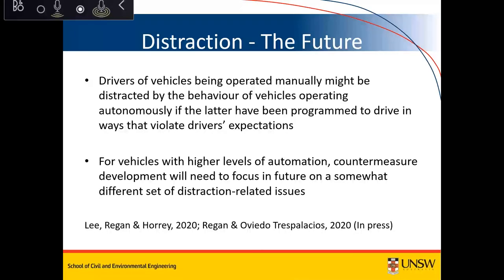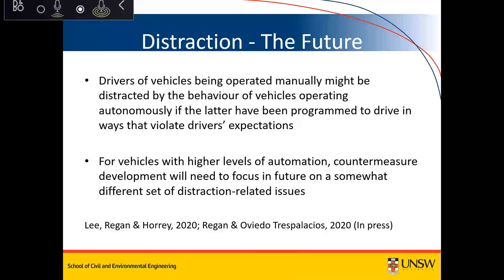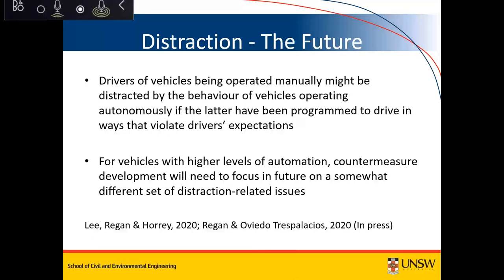Another issue I discussed in that book chapter is that drivers in future might be distracted by the behavior of autonomous vehicles operating in ways that violate their expectations. Just as an erratically driving vehicle attracts attention in a traffic stream, if automated vehicles drive in ways that violate our expectations, those vehicles themselves could become a source of distraction. These are just a handful of issues — I talk more about this in that book chapter and in other recent papers.